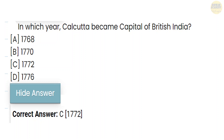Next question: In which year did Kolkata become the capital of British India? In the year 1772, Kolkata became the capital of British India. Please share your answer in the comments below.